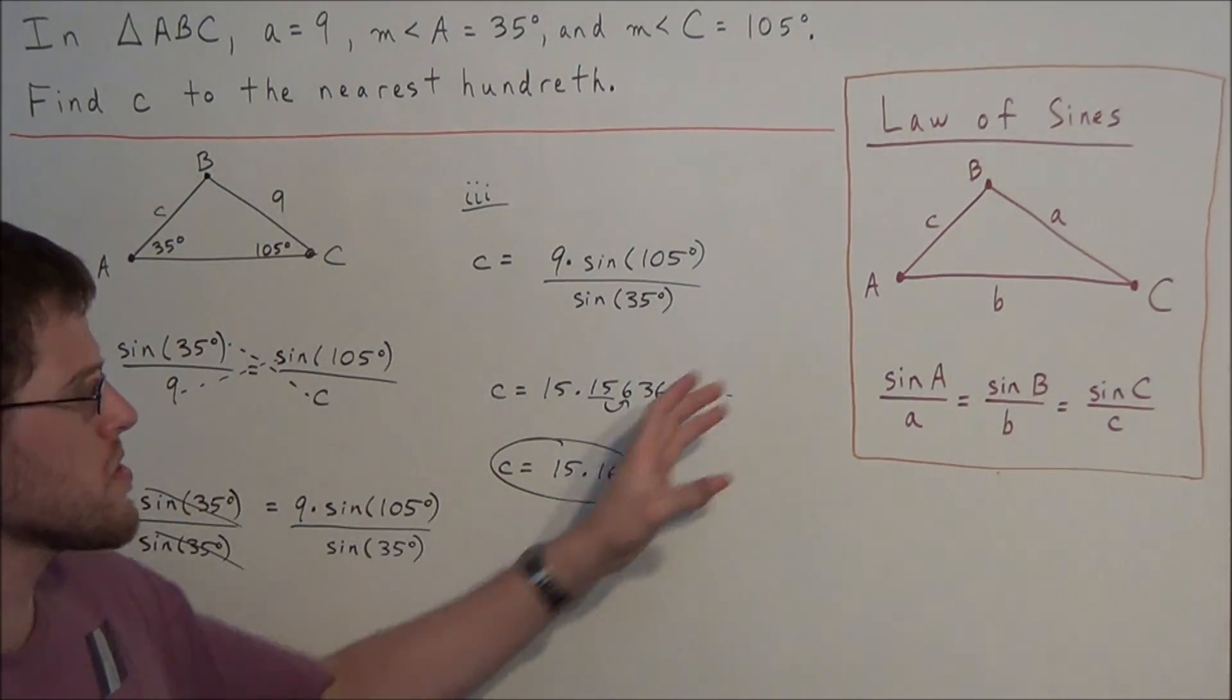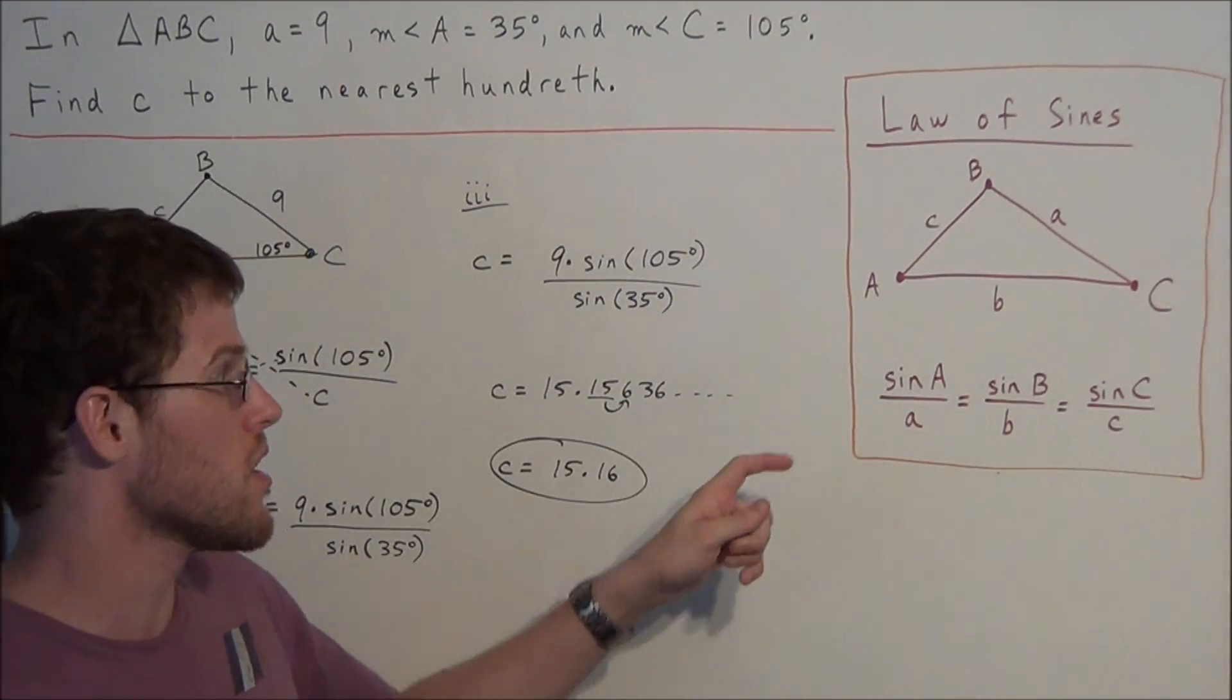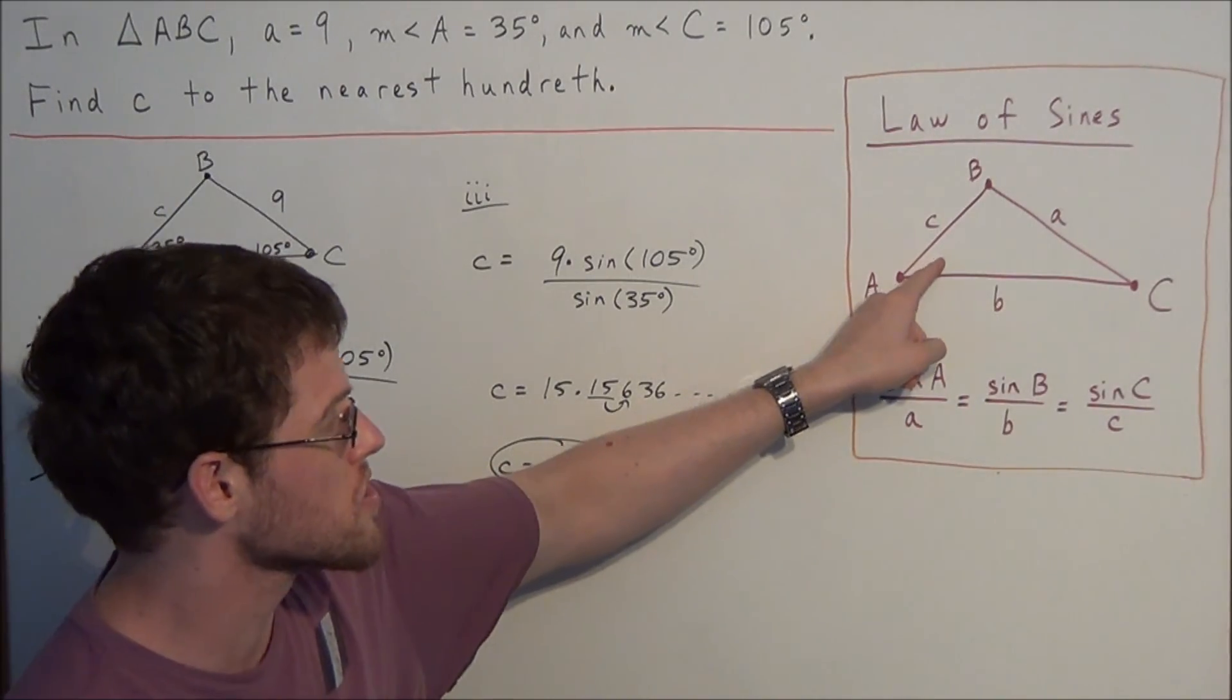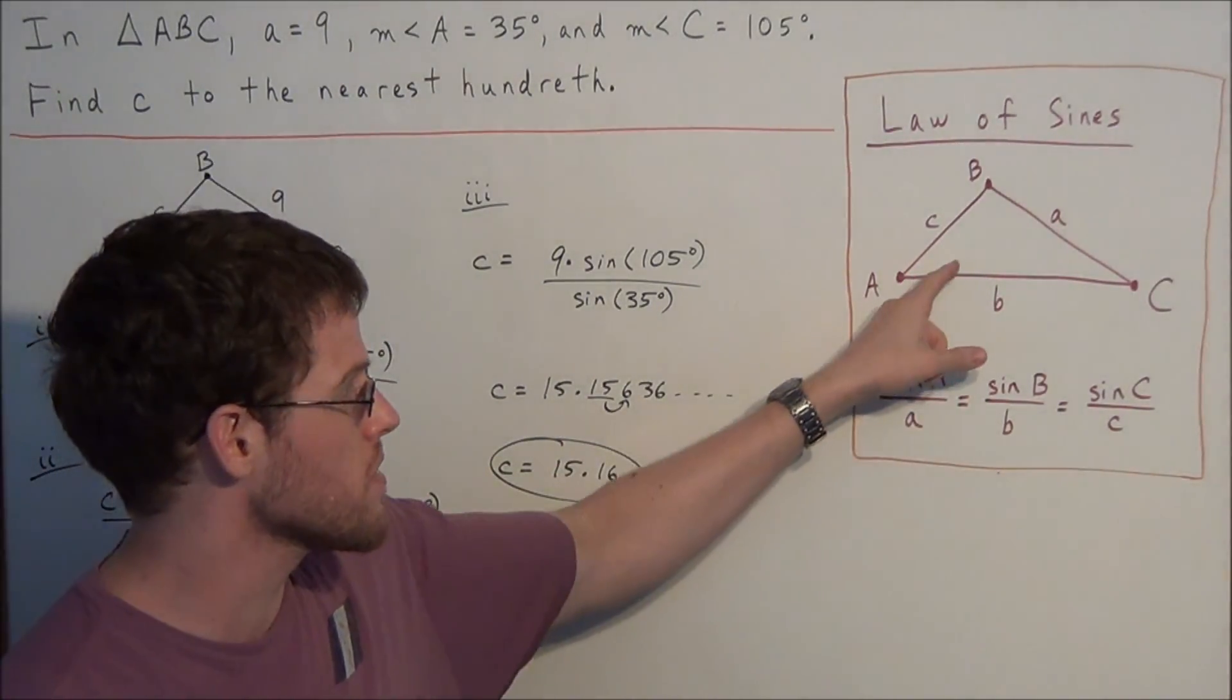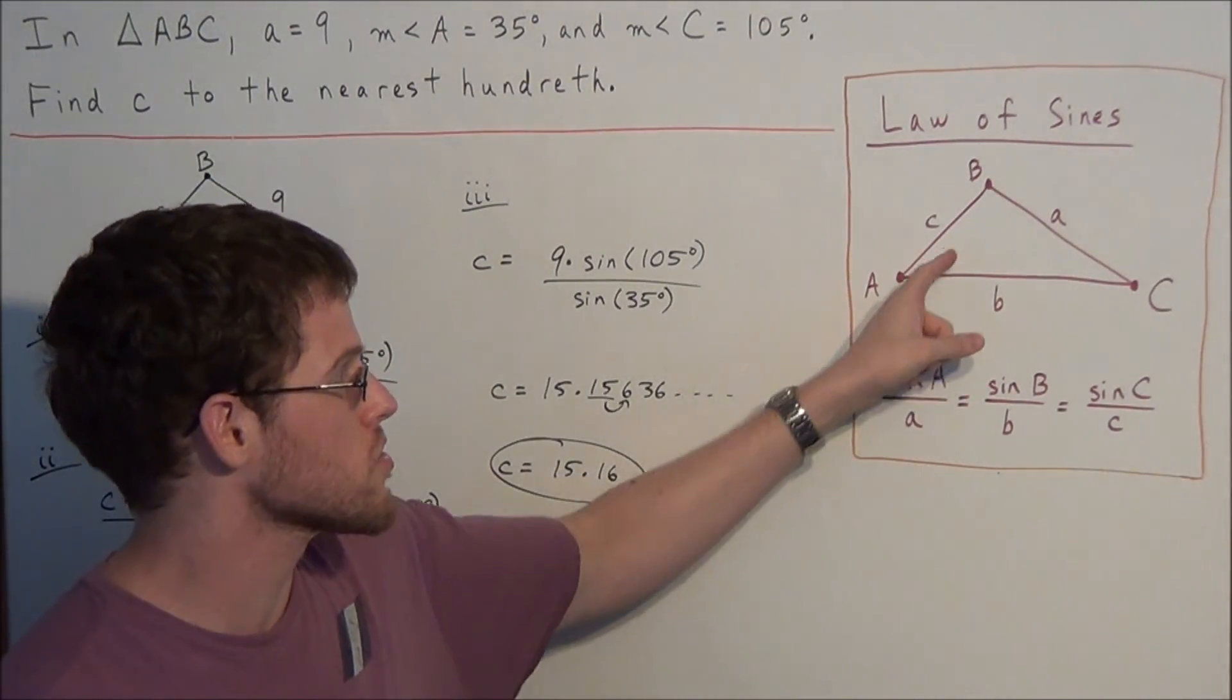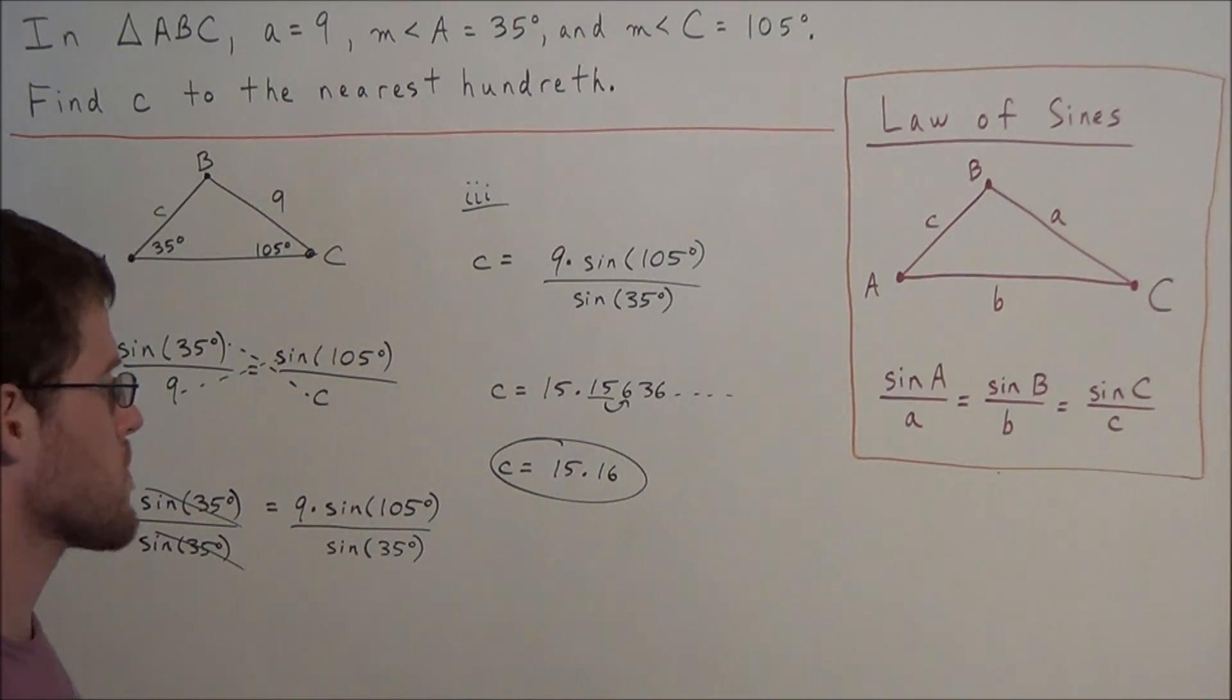So this is how we would use the law of sines. You just have to be very careful and just remember that it's a ratio comparing the sine of an angle to the side opposite of that angle. And we could use any one of the angles corresponding to their opposite sides. So this is our answer. We have c equals 15.16.